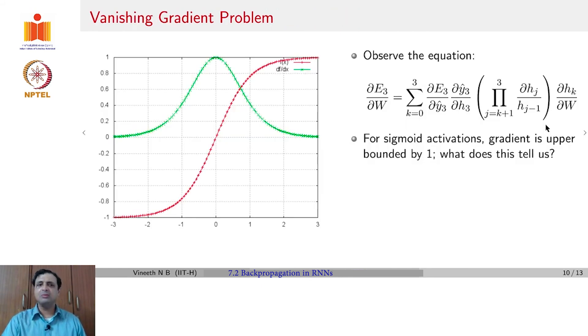Is this really a problem? Let us consider, say, a sigmoid activation function that we use in a layer in the RNN. We know that the sigmoid function is upper bounded by 1, the values lie between 0 and 1. Even if we took a tanh activation function, it would lie between -1 and 1. The gradient of the sigmoid activation function is also upper bounded by 1, which means all these terms will have gradients which are upper bounded by 1.